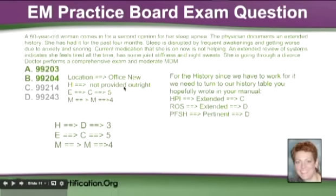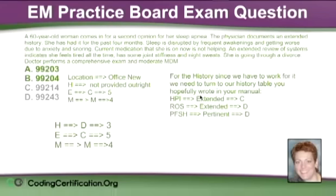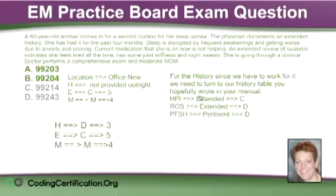What this question is doing is making us work for the history. Since we have to work for it, we need to turn to our history table that you hopefully wrote in your manual. This is classic for board exams — they want to know that you know how to find codes, but more importantly, can you pick the right code? By having to come up with the history, that shows them you know how to pull the history out of your documentation and pick the correct code.